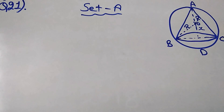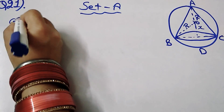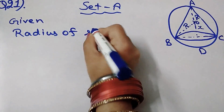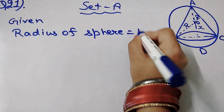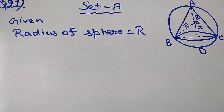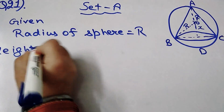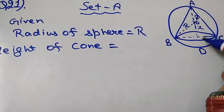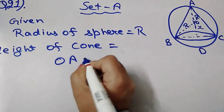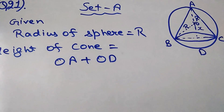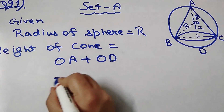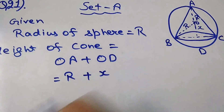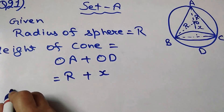Given that the radius of the sphere is equal to capital R. The height of the cone is equal to OA plus OD, where OA is the radius of the sphere, capital R, and OD is x.